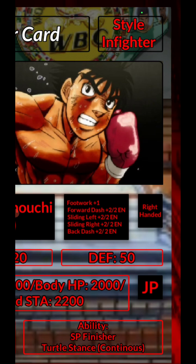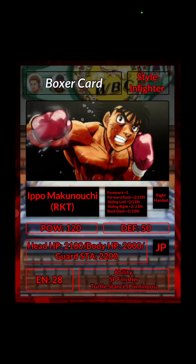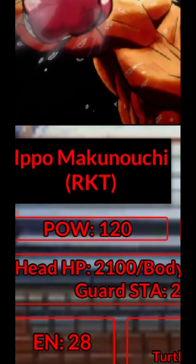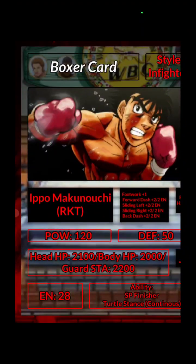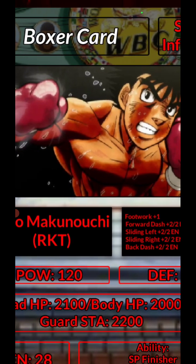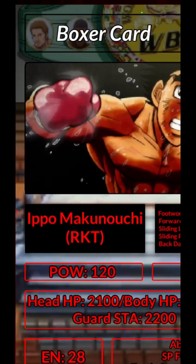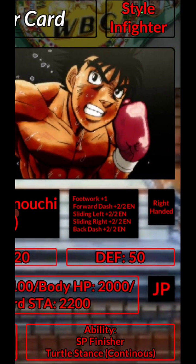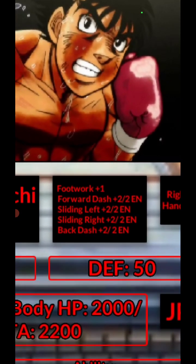There are so many I can't even think of them all right now, but there are about 20 stances you can choose from. If you go down here you can see the portrait of the boxer in the middle, and then the name of the boxer — Eepo Makunouchi. Below that it says RKT, which means the series the character is in, so this is Eepo during the Rookie King Tournament. That's what that stands for.